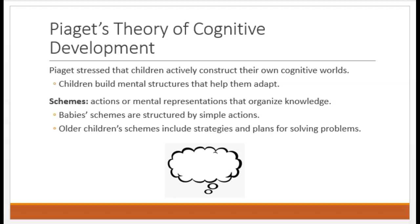Piaget proposed that as children try to understand the world around them, they start to build what he called mental schemes. Schemes are kind of like concepts — they're actions and mental representations that organize knowledge. They start out simple, like what is a dog, or what happens when I drop something. As children get older, their schemes include strategies and plans for problem solving, like how should I act if I want to be polite.